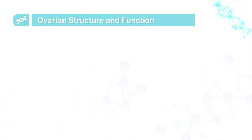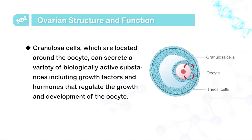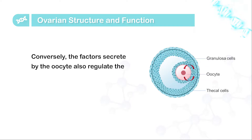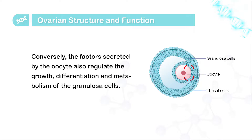Firstly, let's see the function of granule cells. Granule cells, which are located around the oocyte, can secrete a variety of biologically active substances, including growth factors and hormones, that regulate the growth and development of the oocyte. Conversely, the factors secreted by the oocyte can regulate the growth, differentiation, and metabolism of the granule cell. Therefore, the granule cell and the oocyte can regulate each other to maintain the normal growth, development, and maturation of the follicle.